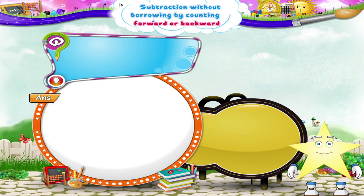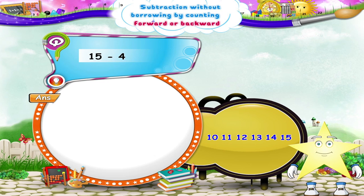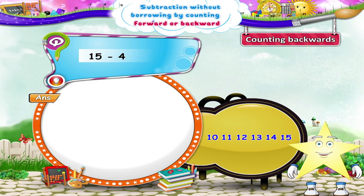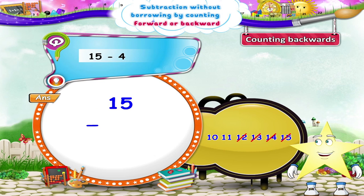Now the next one. Subtract 15 minus 4. Hey Starry! Shall we solve by counting backwards? Ok. So we count back 4 numbers from 15. Thus we count back to 14, 13, 12, 11. So we get 15 minus 4 equals 11.